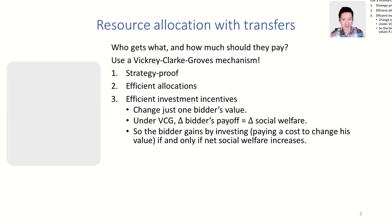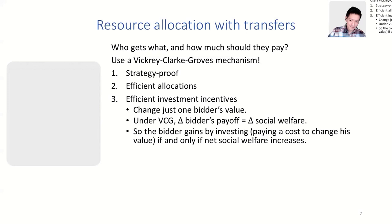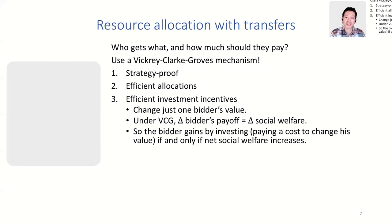The VCG mechanism has several advantages. First, it's strategy-proof: it's a dominant strategy to reveal your value for the resources truthfully. Second, a VCG mechanism chooses an efficient allocation — it takes in all the reports of all the values and chooses an allocation that maximizes social welfare. The third property is less well-known but equally fundamental: VCG mechanisms have efficient investment incentives. Under VCG, the change in a bidder's payoff from changing his value is exactly equal to the change in social welfare. This means a bidder would gain by investing if and only if that investment increases net social welfare.